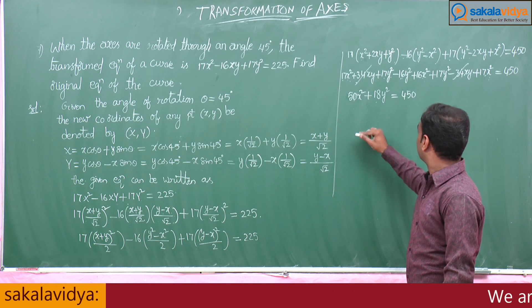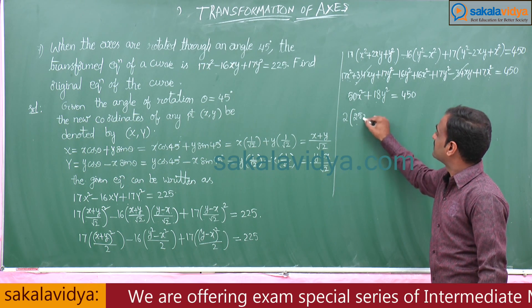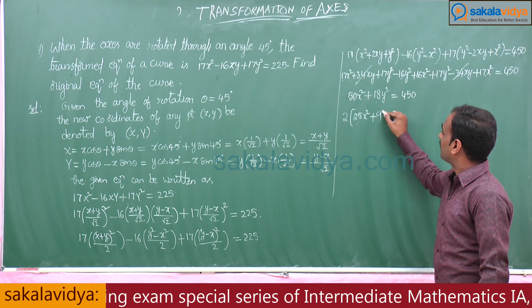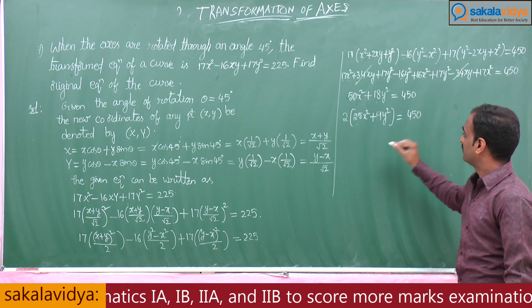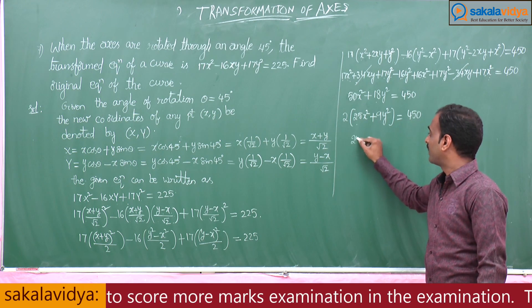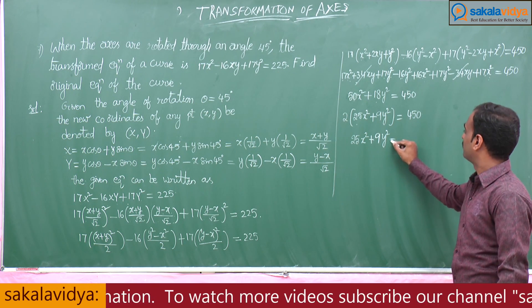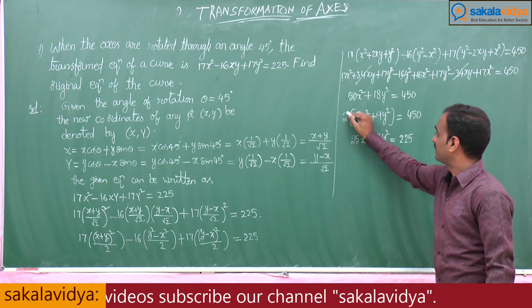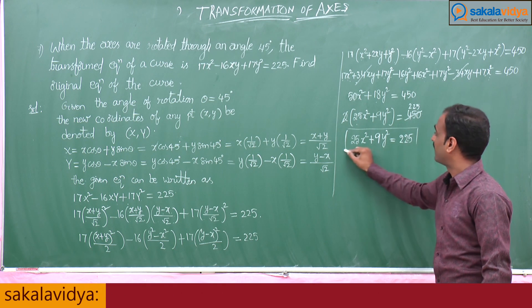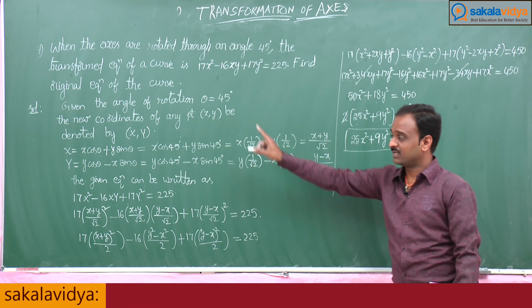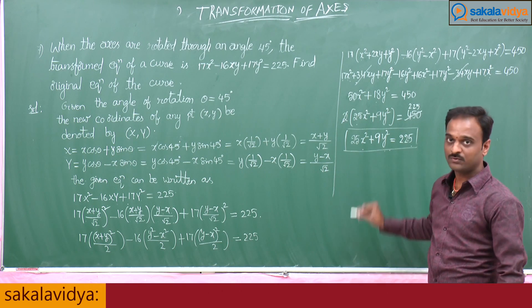Taking 2 as common factor: 2(25x² + 9y²) equals 450. Therefore 25x² plus 9y² equals 225. This is the required original equation of the curve.